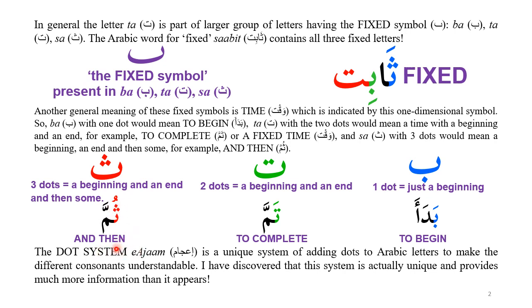'Summa' means 'ended.' In many cases, summa is translated simply as 'then,' which is actually incorrect. The proper translation is 'ended' — meaning something was started, it ended, and then something else was started. That is the full programming of the word summa.